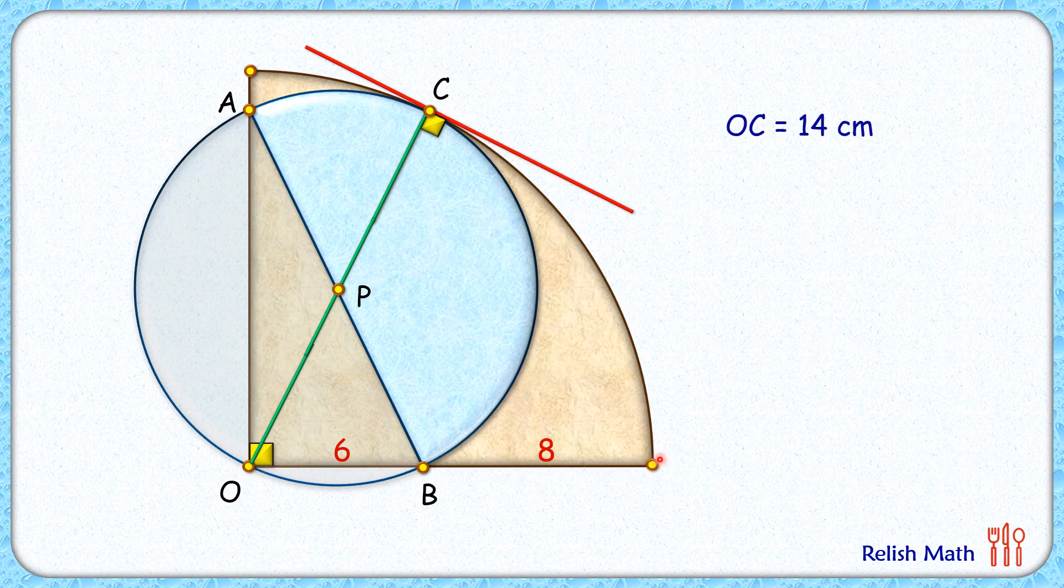So OC is given as 14 cm and OC is also the diameter of the blue circle. So if the diameter is 14, then the radius of this blue semi-circle, that's PC, will be nothing but 7 cm.